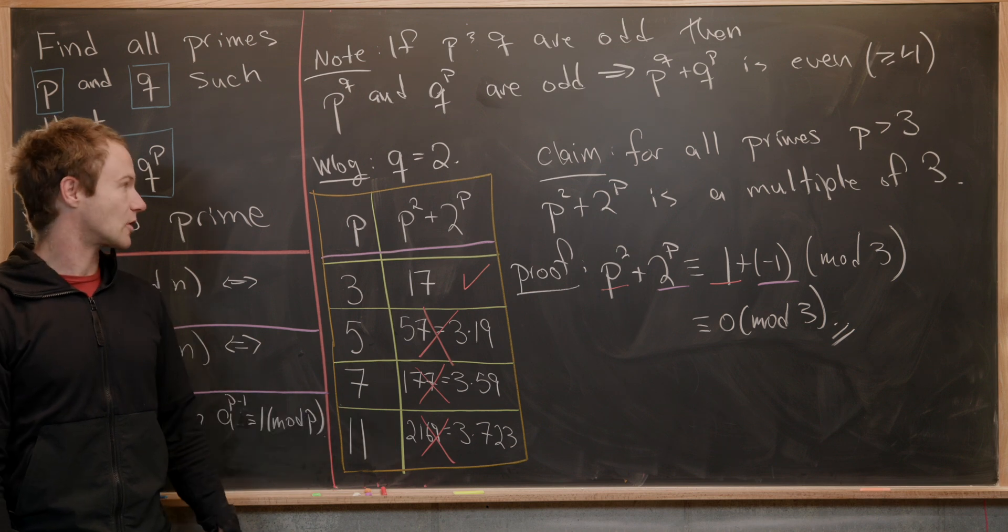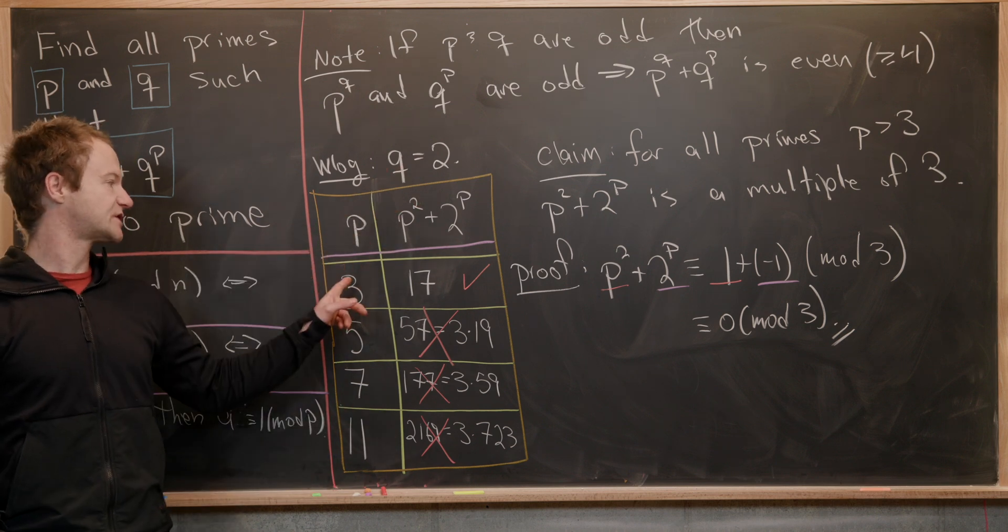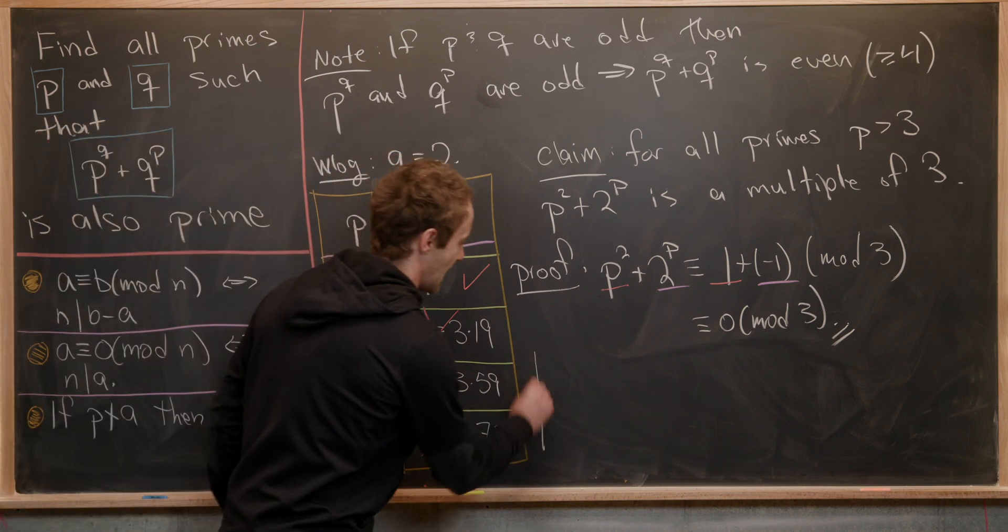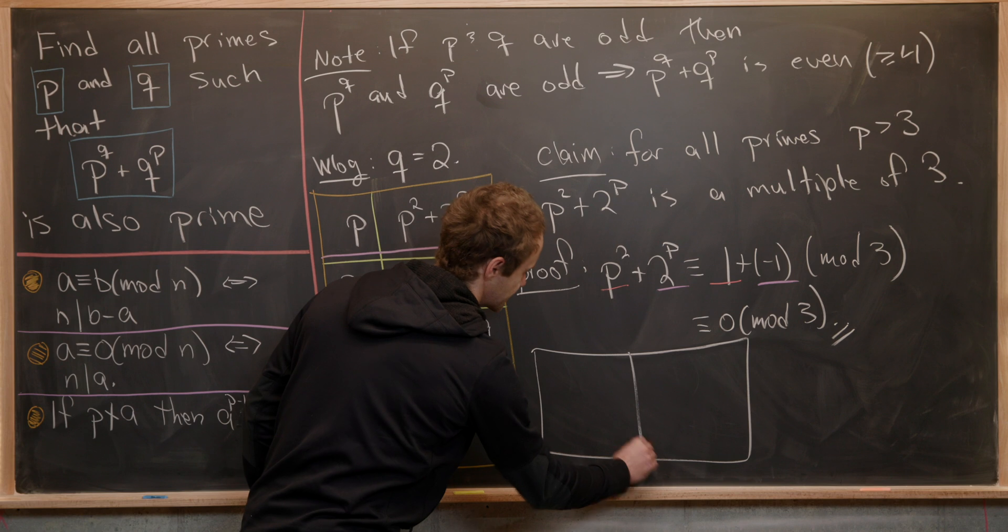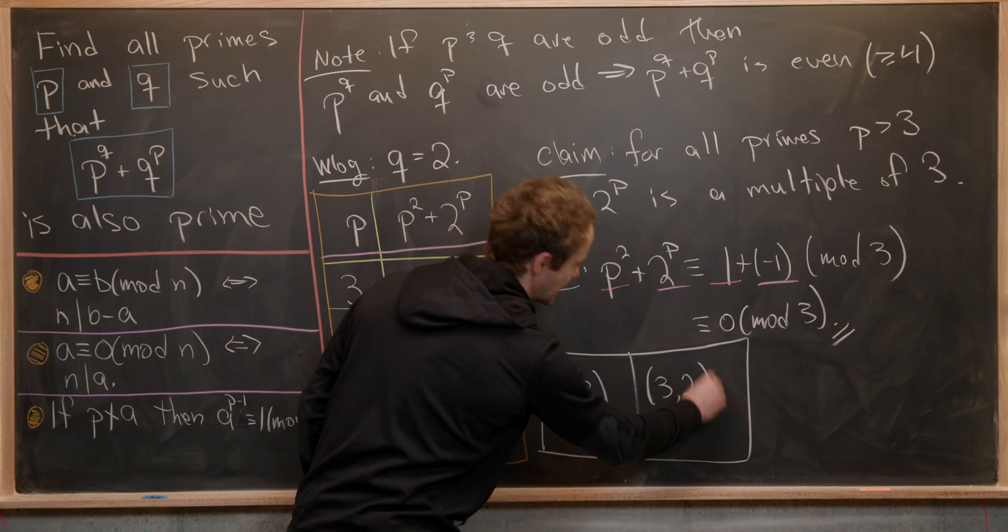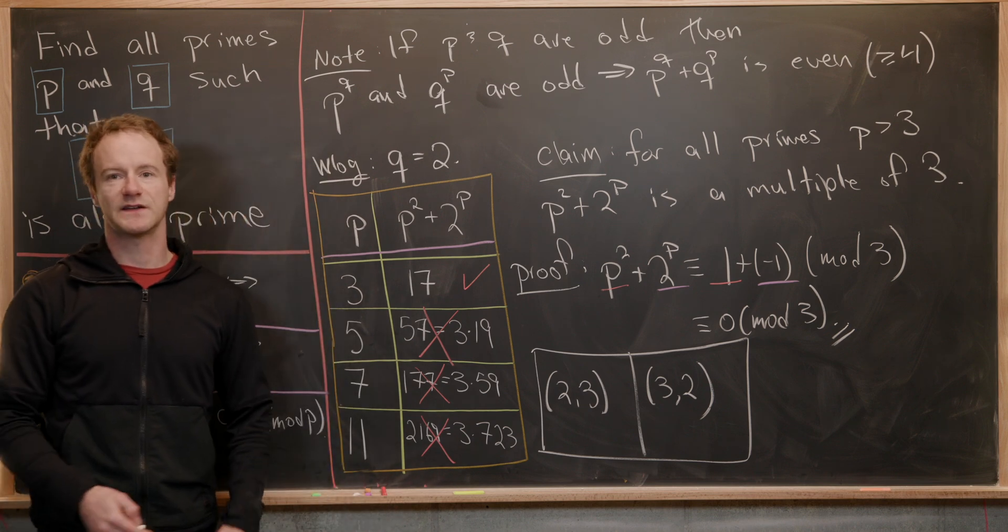But that means our only solution is q equals two p equals three, or the symmetric copy of that. So let's write down all our solutions right here, we can have two comma three, or three comma two. And that's a good place to stop.